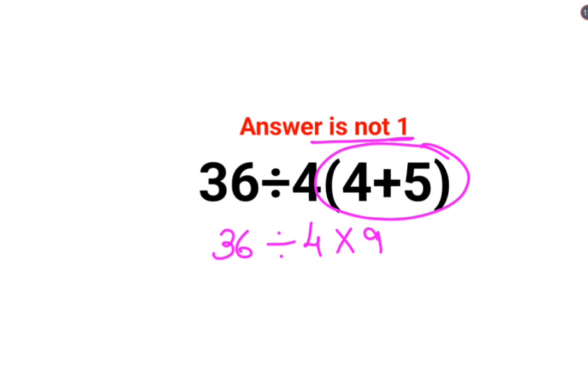Now, a lot of people think that, especially people who are following PEMDAS, multiplication should be done before. So 4 multiplied by 9 is 36. 36 divided by 36, answer comes out to be 1.